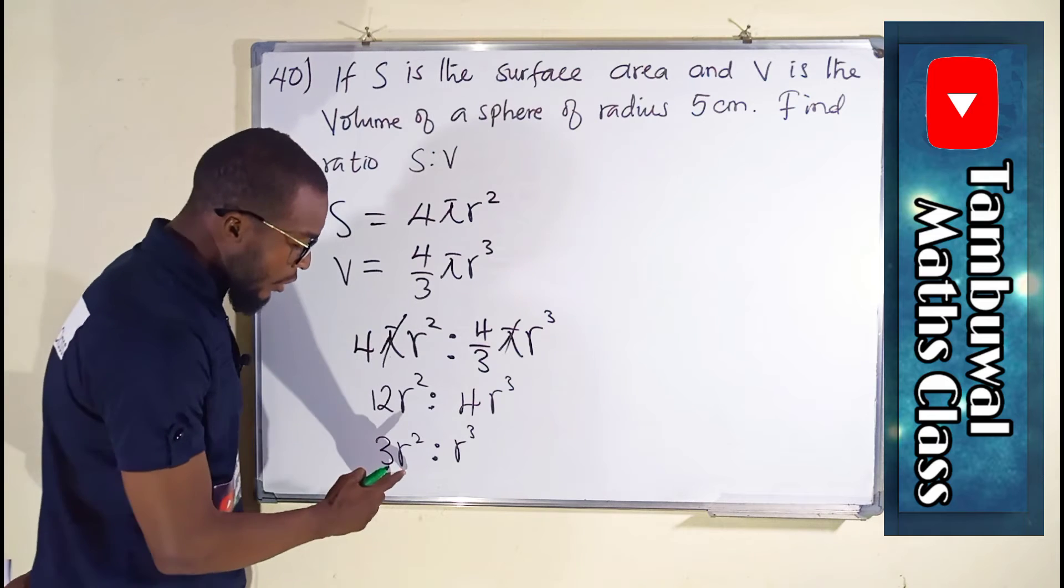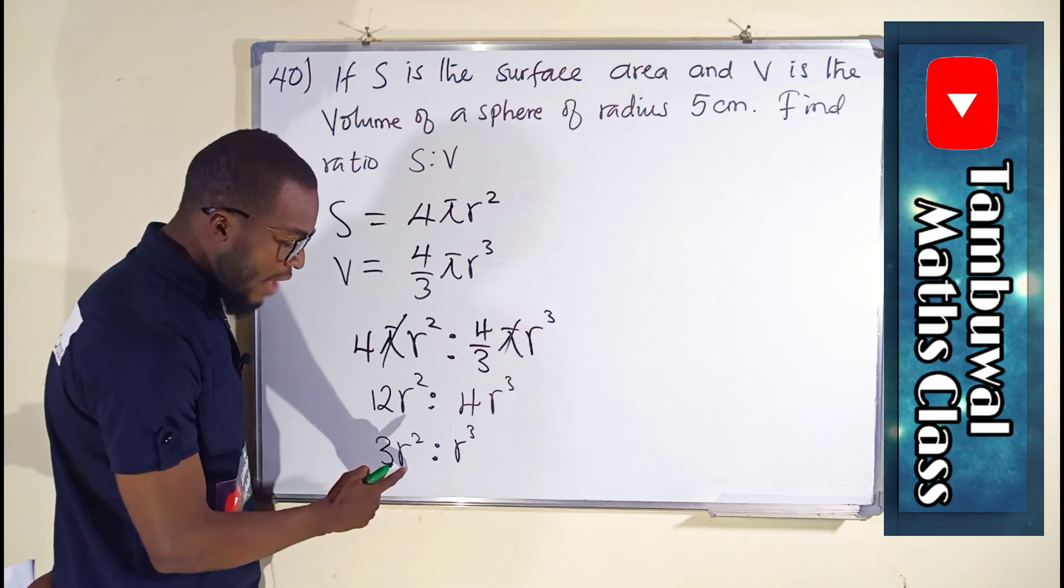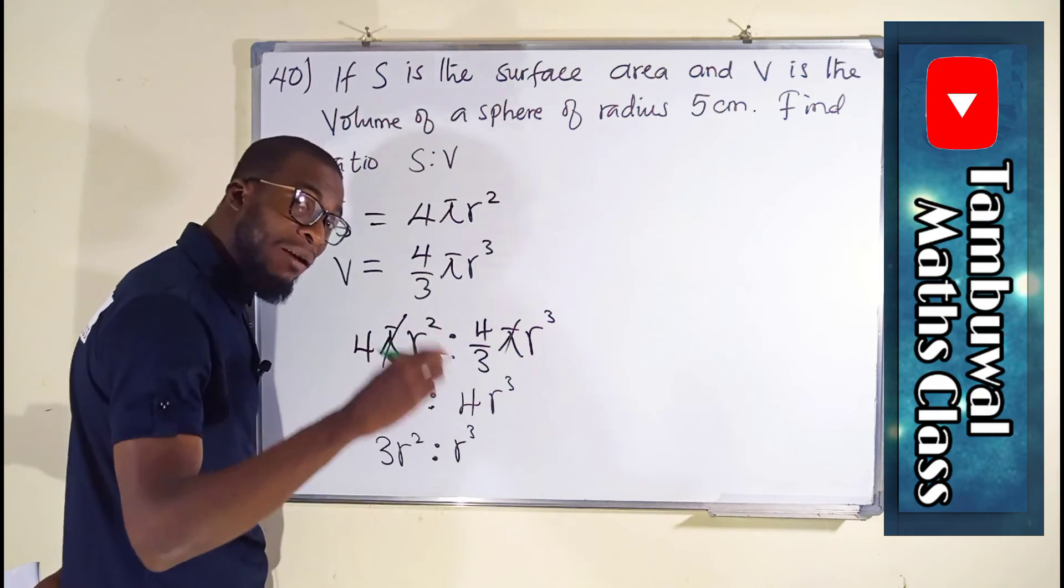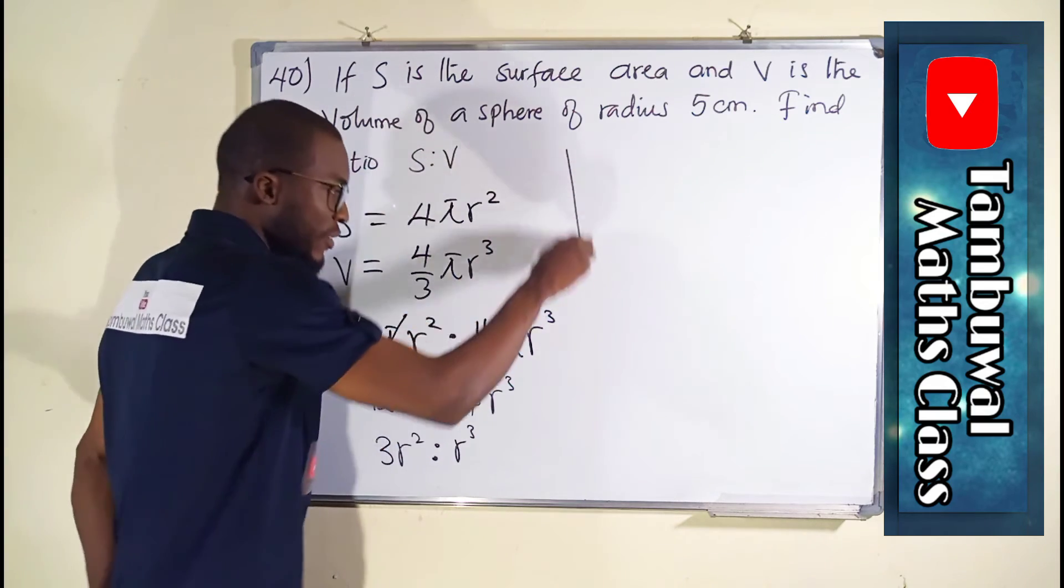We are moving. We have r to the 2nd power here. We have r to the 3rd power here. So, we can divide both sides by r to the 2nd power because that is the smallest one.